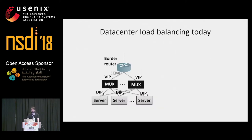Let's see how data center load balancing is performed today. The administrator deploys a number of machines called muxes inside the data center. These muxes are responsible for deciding which connection goes where. Packets belonging to a connection have to consistently hit the same server — otherwise the connection will break. This is called connection affinity.